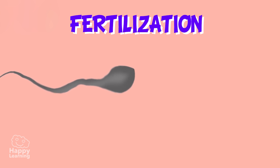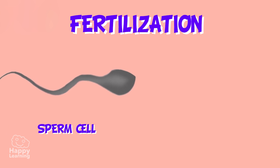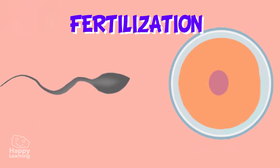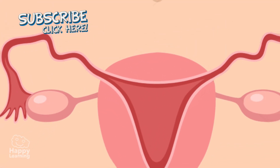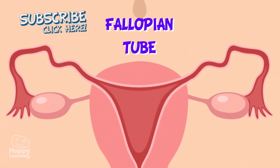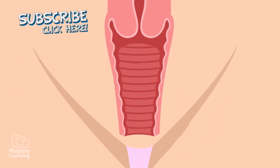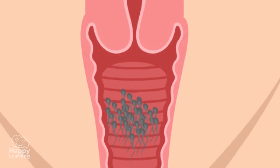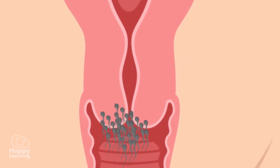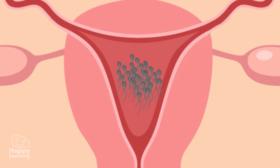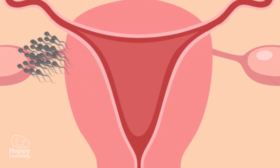Fertilization is when a man's sperm cell and a woman's egg cell, released from her ovaries, unite. This happens inside the woman's body, normally in the fallopian tube. In order for that to occur, semen, which carries hundreds of thousands of sperm cells, must first pass through the vagina into the uterus to finally reach the fallopian tubes.